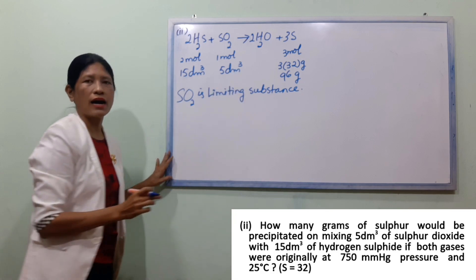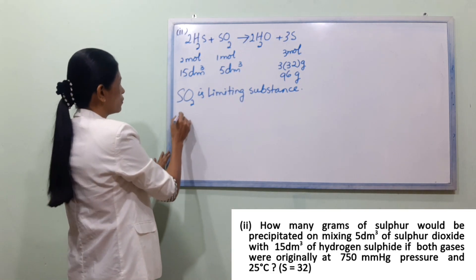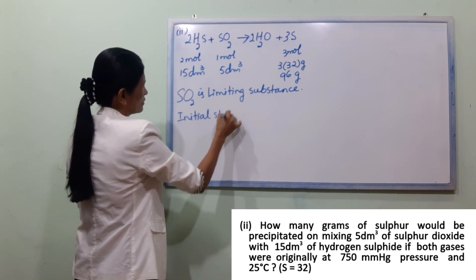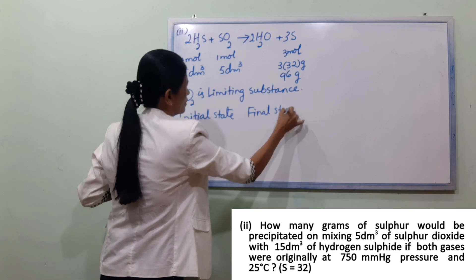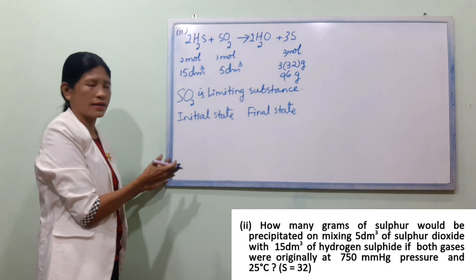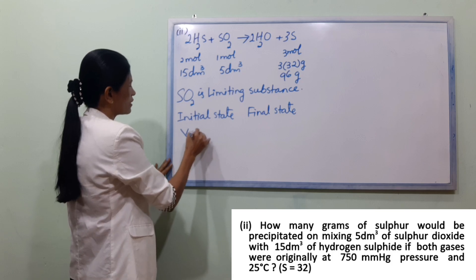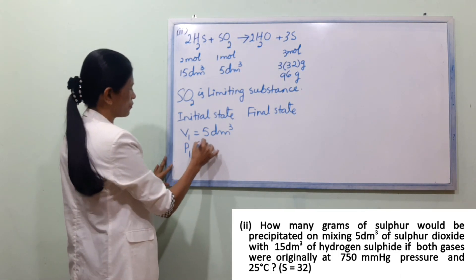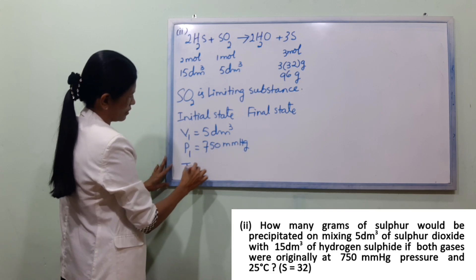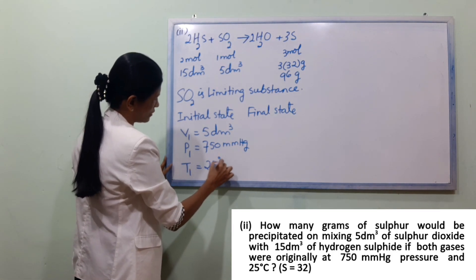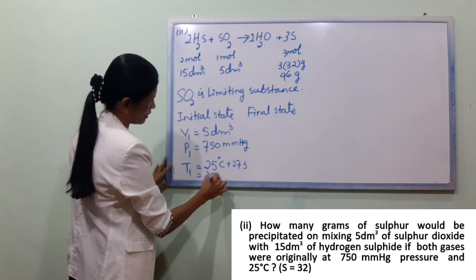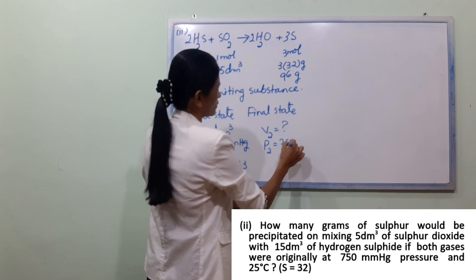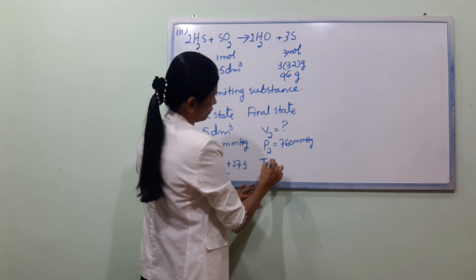Now we are going to find V2. Standard pressure — we are going to do the same thing with initial state and final state. P1 is equal to 750 mmHg. T1 is 25 degrees Celsius plus 273, which equals 298 K. V2 is the question; standard pressure P2 is 760 mmHg, T2 is 273 K.